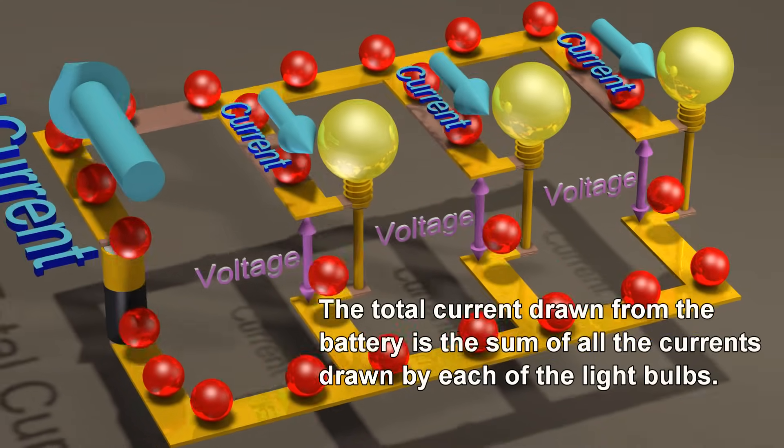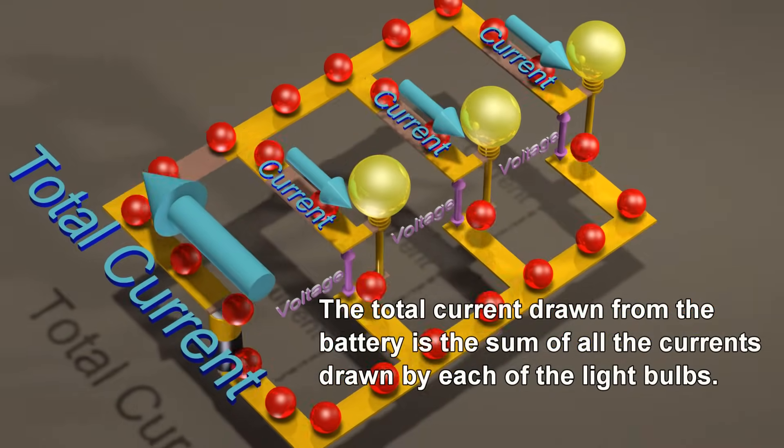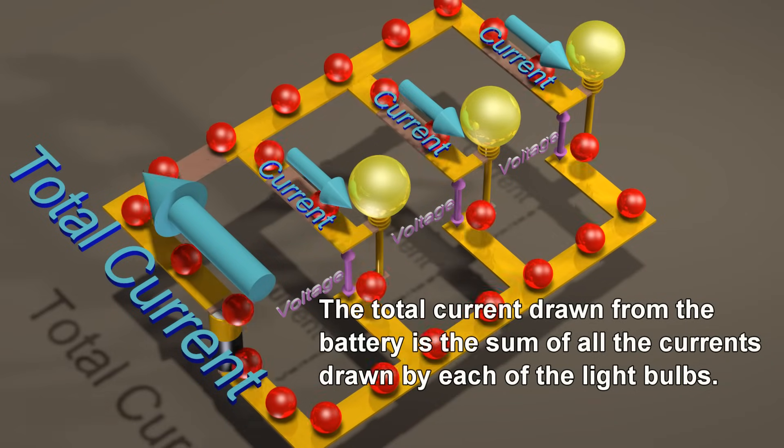The total current drawn from the battery is the sum of all the currents drawn by each of the light bulbs.